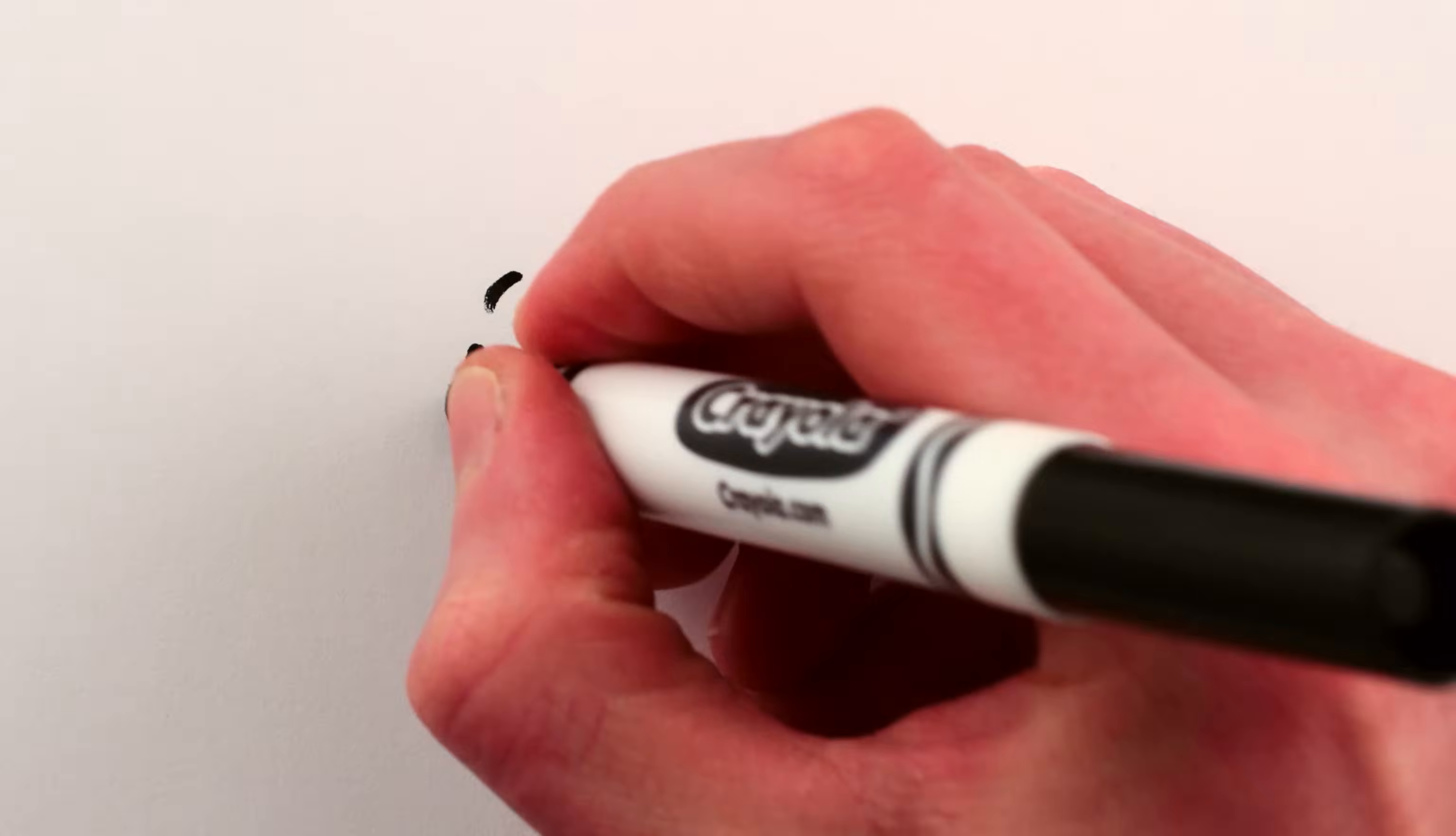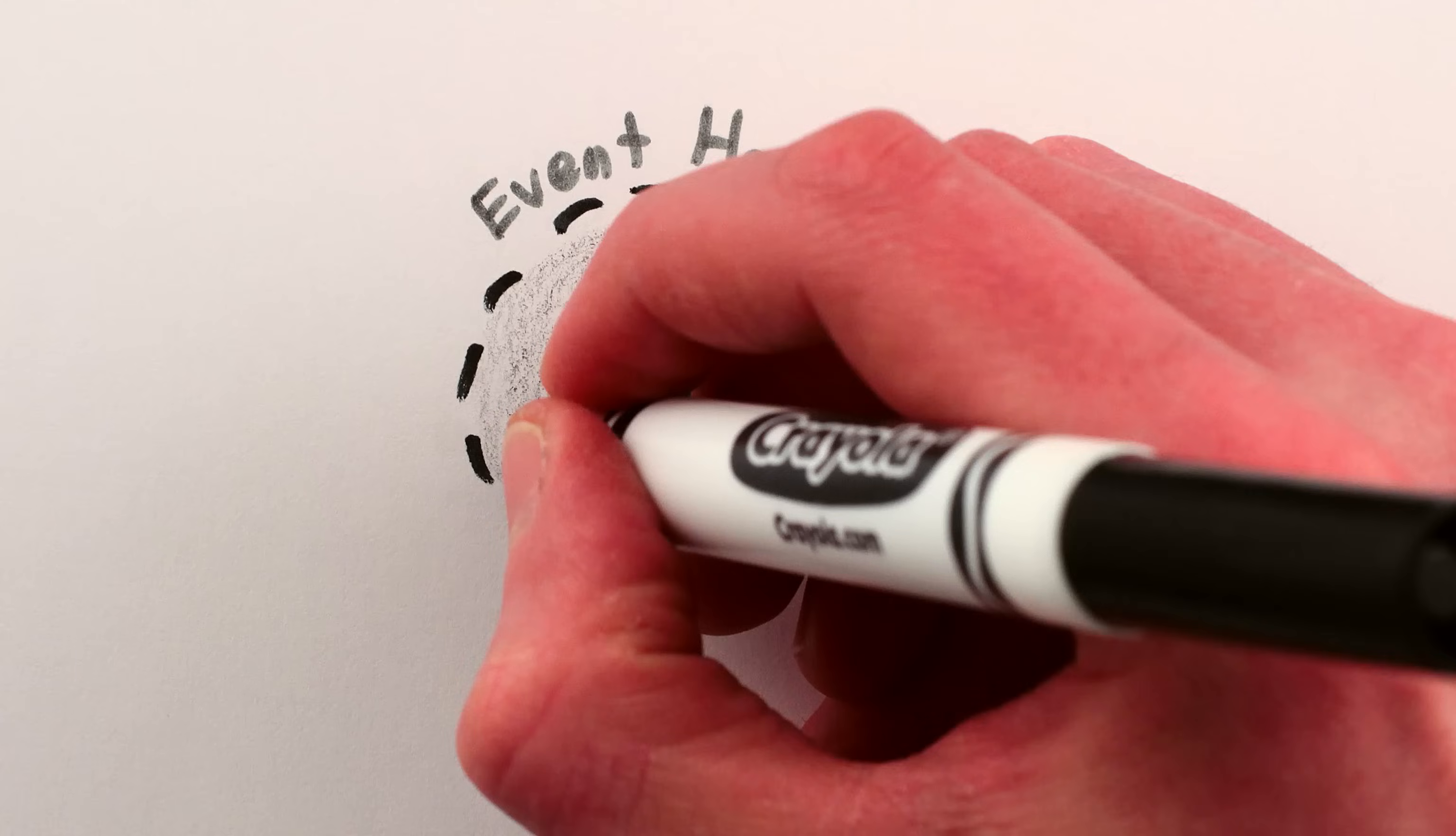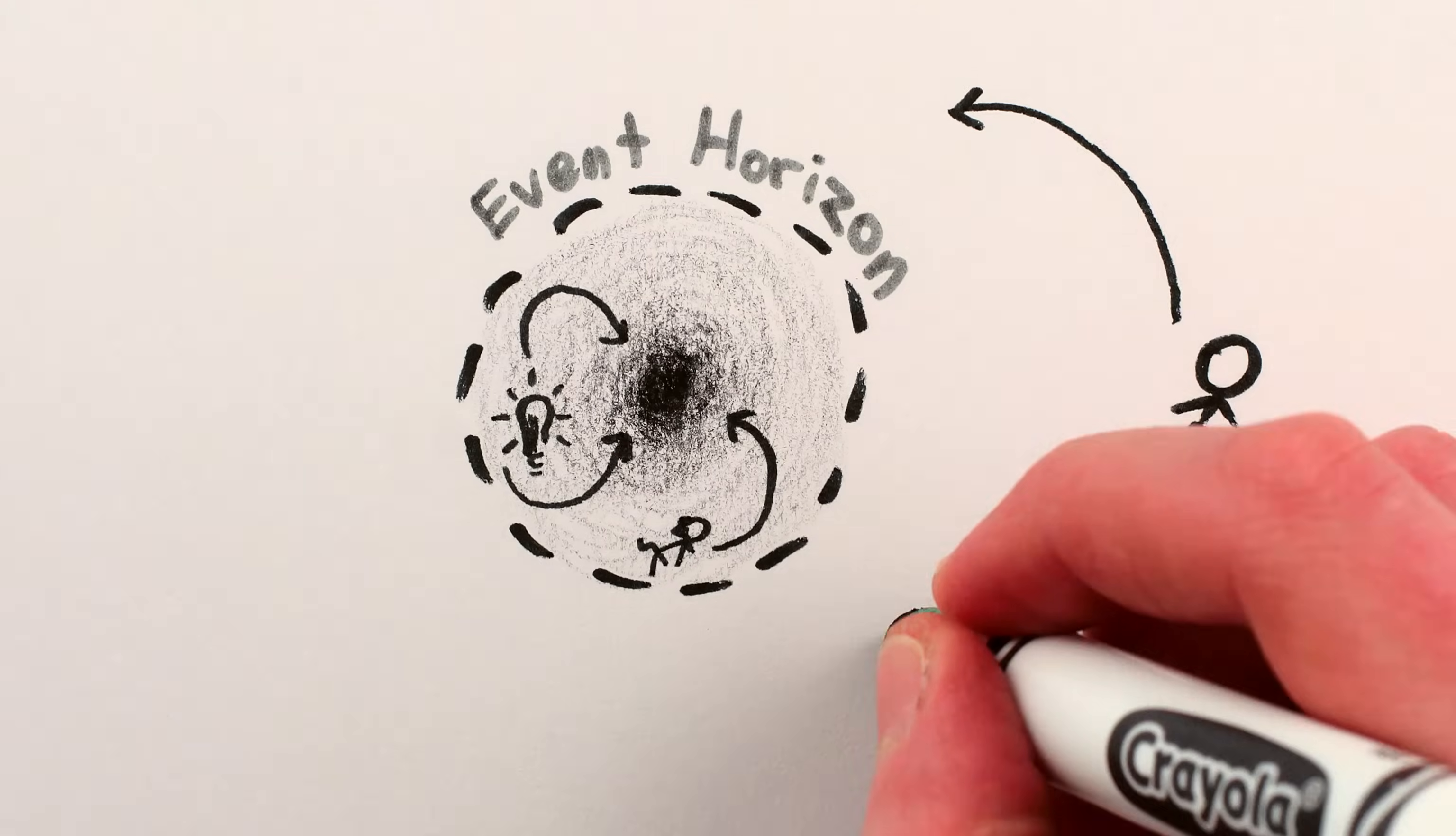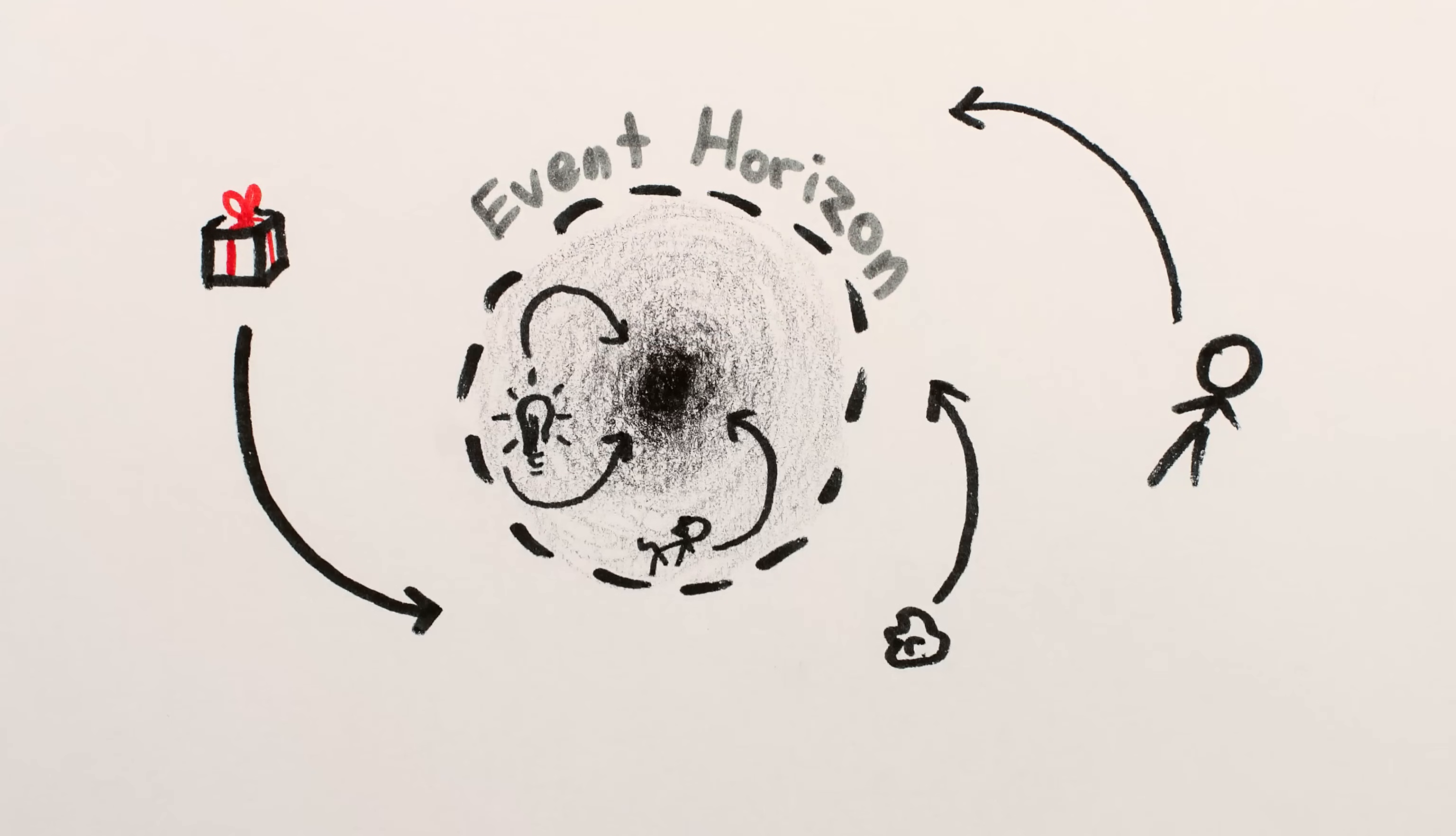This is where black holes come in. They're about as good as it gets in our universe for extracting energy from mass. Which may sound weird, because as you've probably heard, nothing can escape black holes... once inside. But the efficiency of black holes comes from what stuff does while falling towards them, before passing the no-turning-back point of the event horizon.